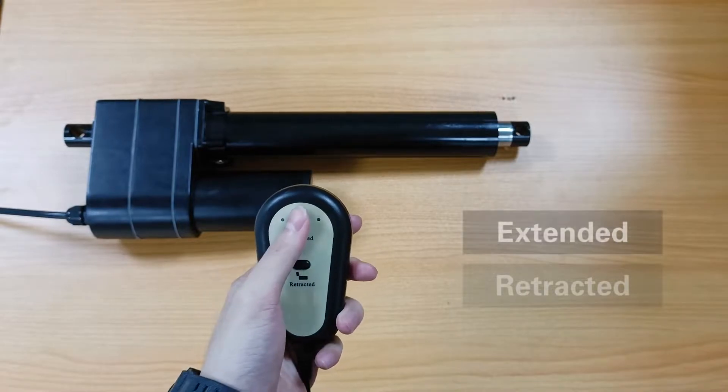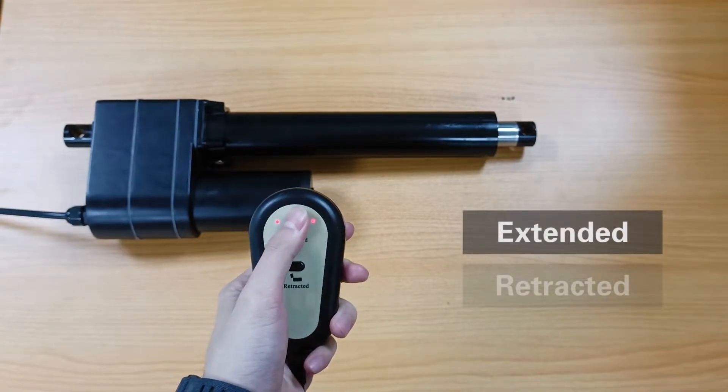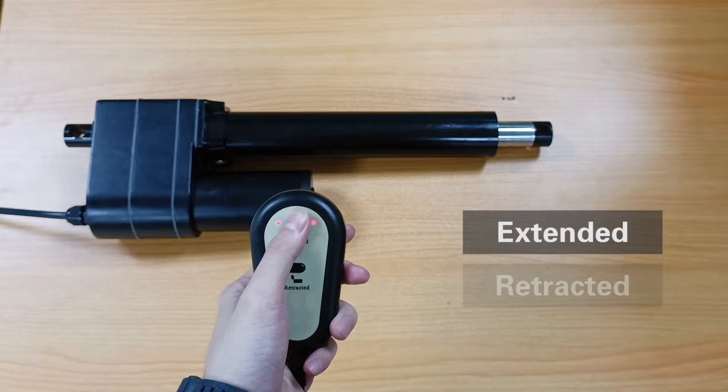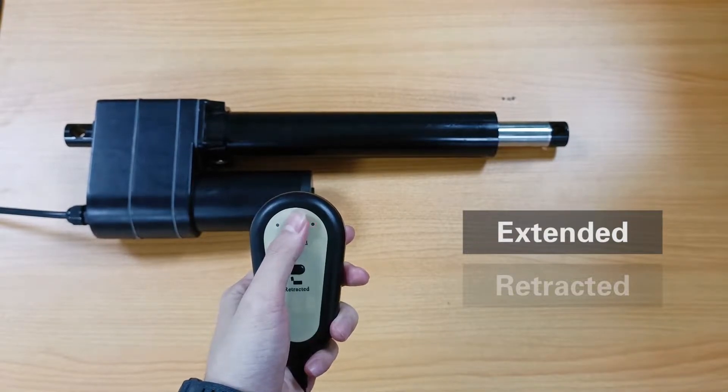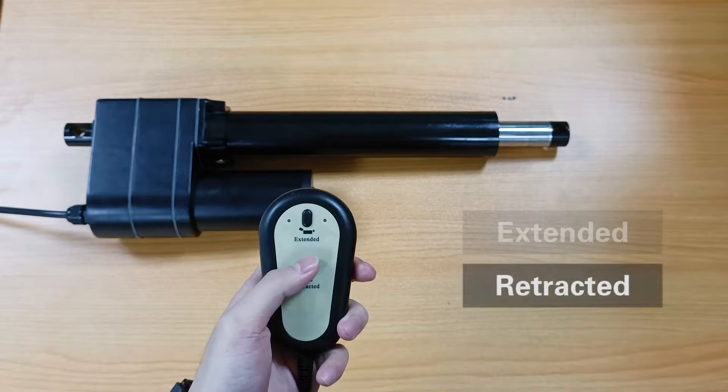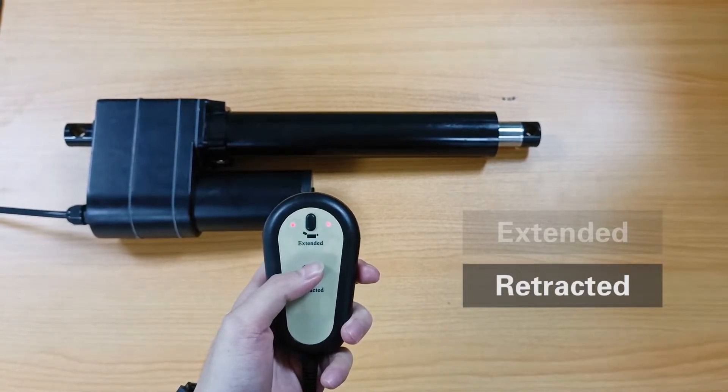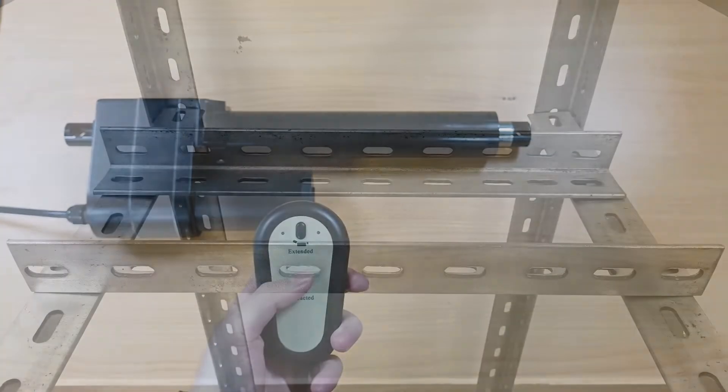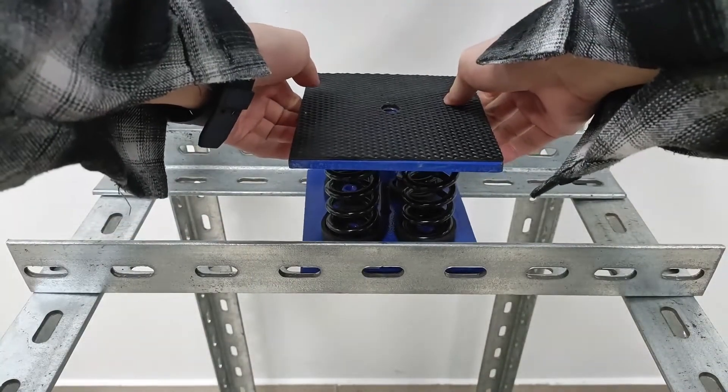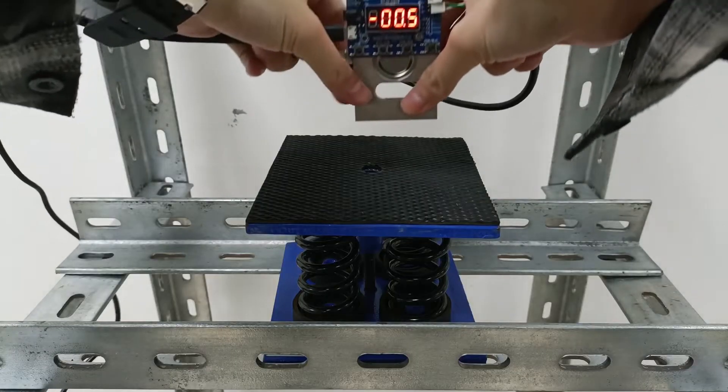The control handle has two buttons. One button is used to operate the linear actuator to extend outward, and the other button is used to operate the linear actuator to retract inward.